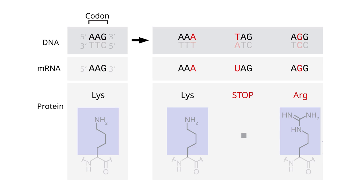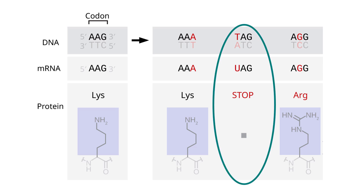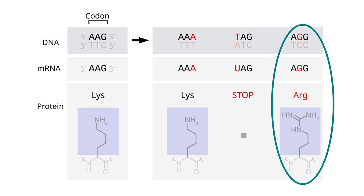In the first example, the original mRNA codon is AAG, which codes for lysine. In a silent mutation, the G is replaced with an A, but the codon sequence still results in lysine being produced. The second example shows a nonsense mutation, where A is replaced with U, resulting in an early stop codon. In the last example of a missense mutation, A is replaced by G, resulting in coding for a different amino acid, arginine.